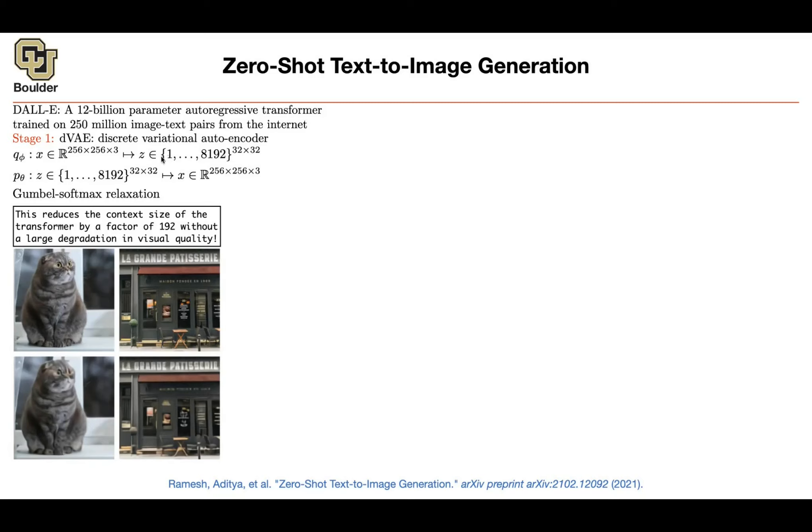Now your image is a bunch of tokens. It's 32 by 32 tokens. That's your context. And these are your tokens. Now your image is a sentence. And that's the vocabulary size for your images. So now your image is a sentence. Perfect.